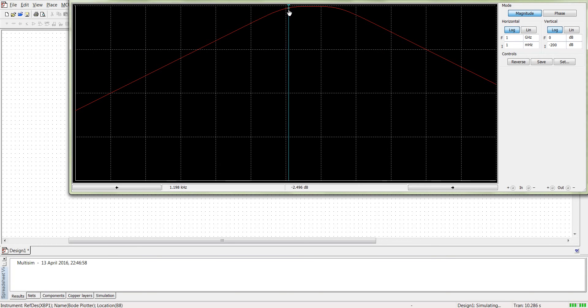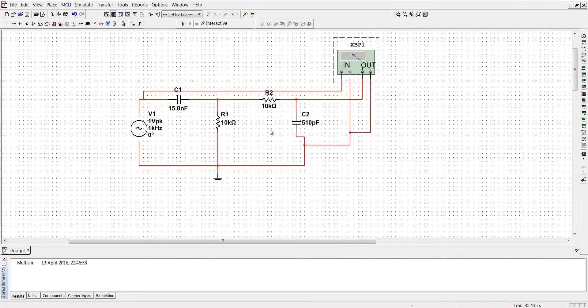The lower cutoff at minus 3dB is almost around 1 kilohertz, and the upper 3dB frequency is around 30 kilohertz. Thanks for watching and stay tuned for the next tutorial.